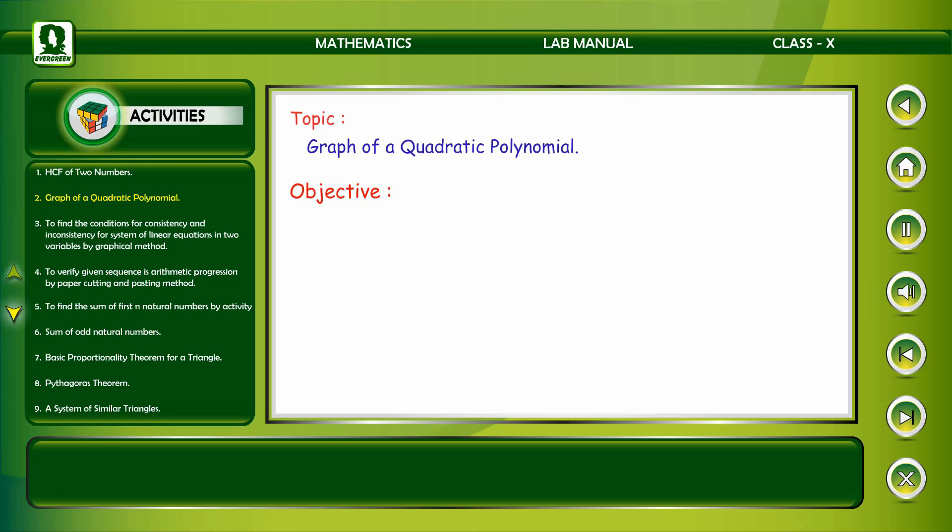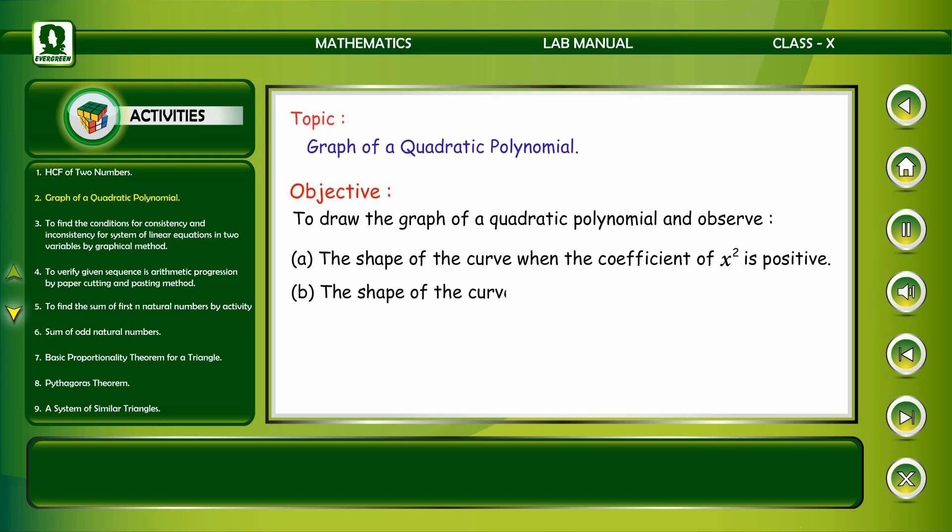Objective: To draw the graph of a quadratic polynomial and observe the shape of the curve when the coefficient of x² is positive, the shape of the curve when the coefficient of x² is negative, and its number of zeros.